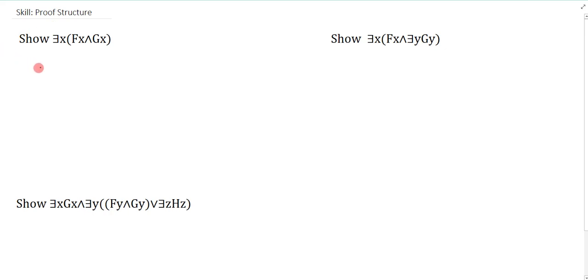So let's look at this first example. Here I want to show there exists x, Fx and Gx. So what does that really mean?